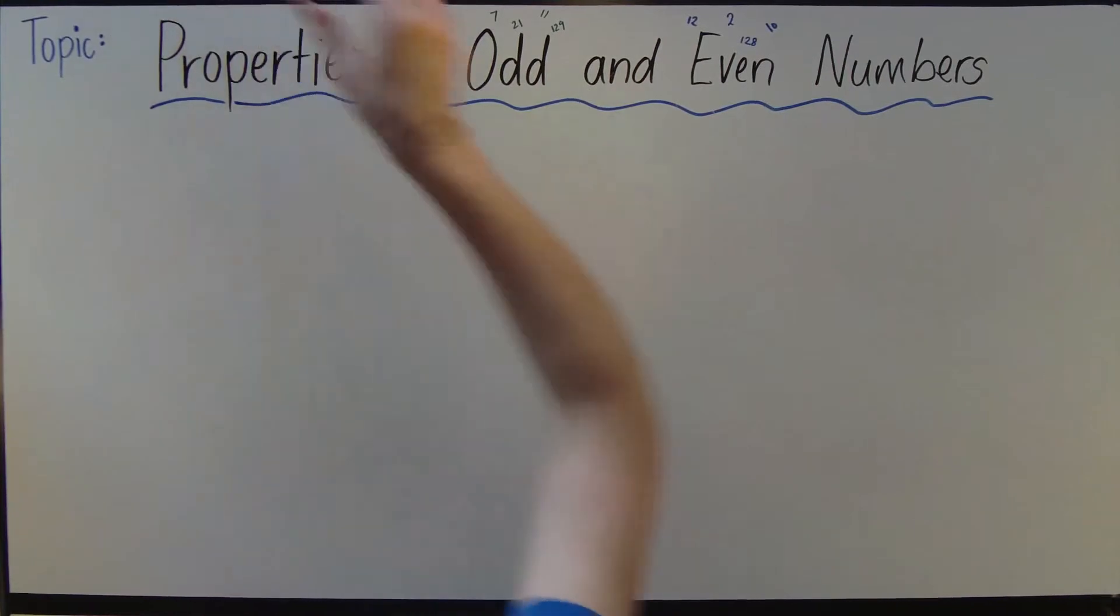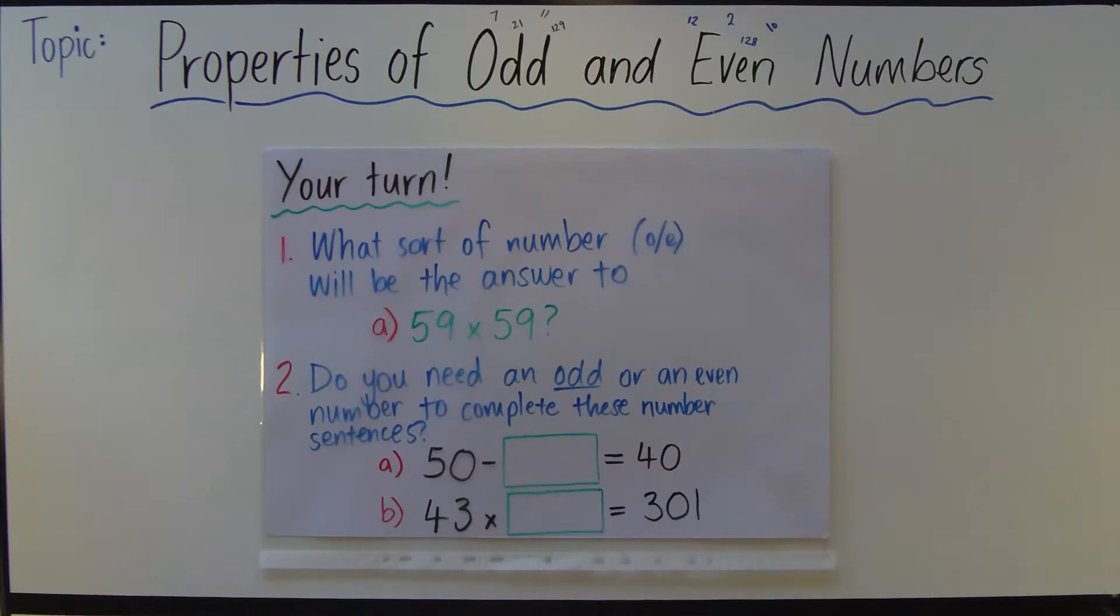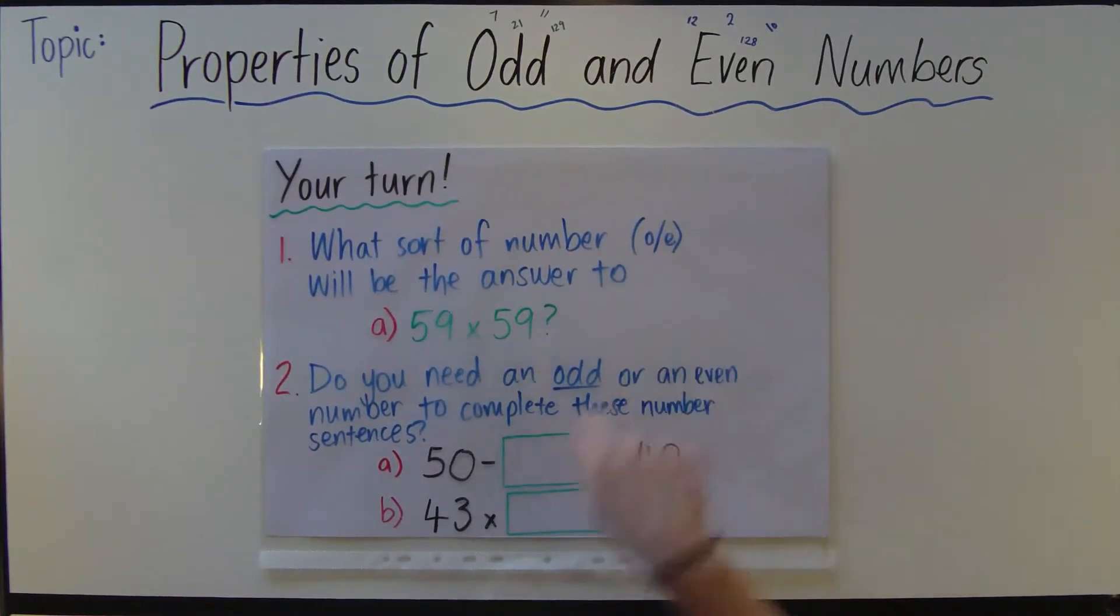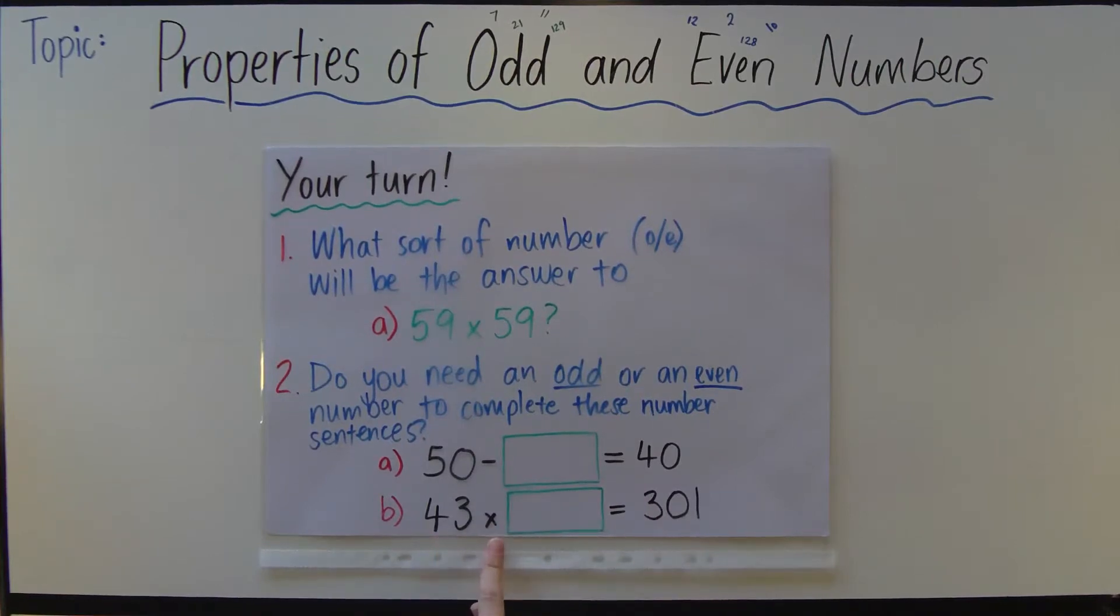Now this is your turn to have a go. Here are some questions: what sort of number, odd or even, will be the answer to 59 times 59? And do you need an odd or an even number to complete these number sentences? We've got 50 take away something is 40, and 43 times something is 301. Make sure you pause the video now and have a go with these practice questions on your maths sheet for homework.